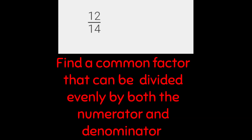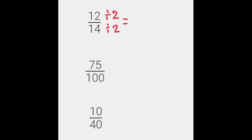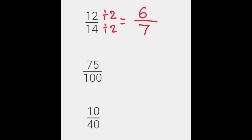So twelve over fourteen — we know that we're going to divide that by two. Whatever you do the bottom, you do the top. Twelve divided by two gives us six, and fourteen divided by two gives us seven. So six over seven is equivalent to twelve fourteenths.